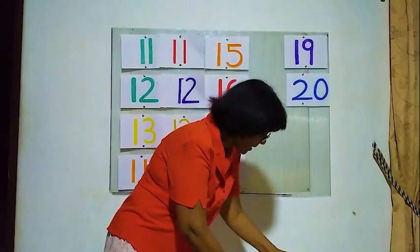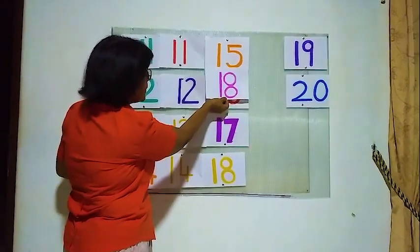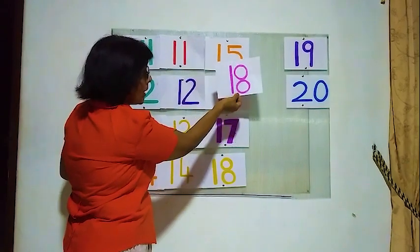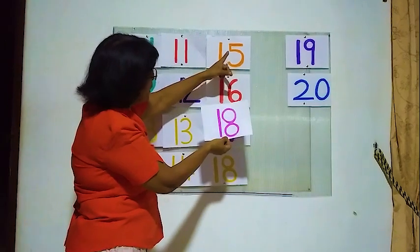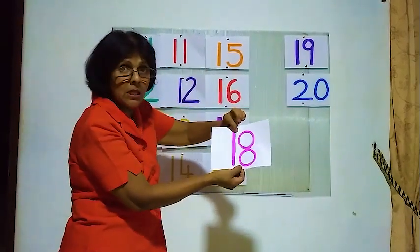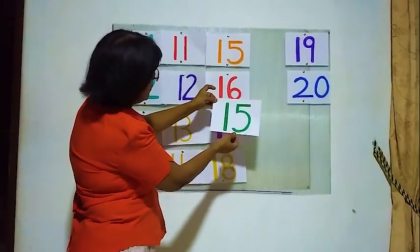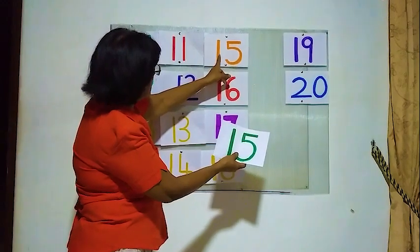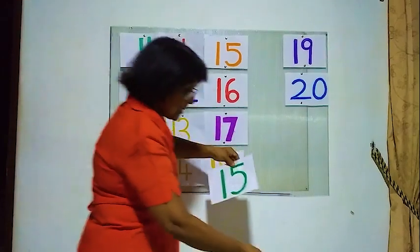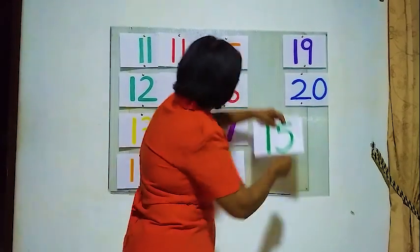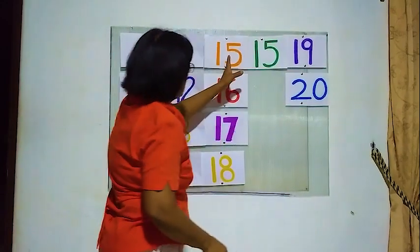We will have to find 15. This is 15, this is 18 — this is wrong. We will see this one. Is this correct? 1 and 5, we have to find 15. Is this correct? Yes! This is correct. We will fix this — 15. This is number 15.